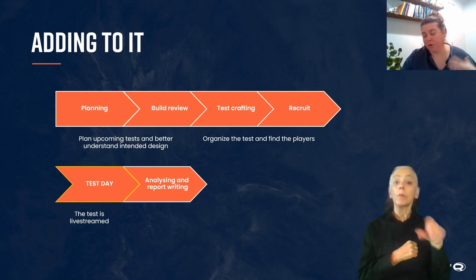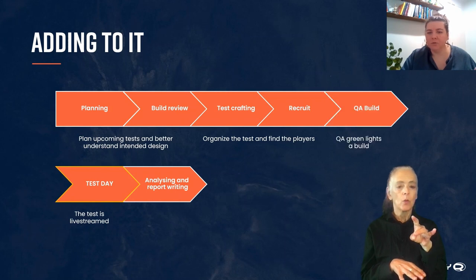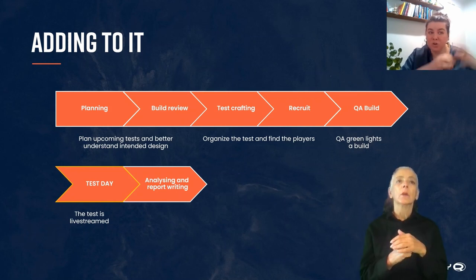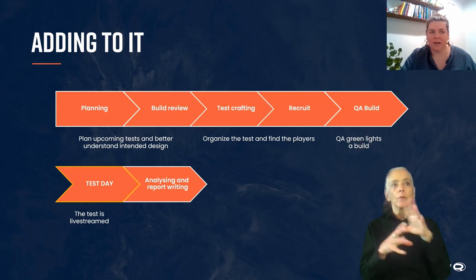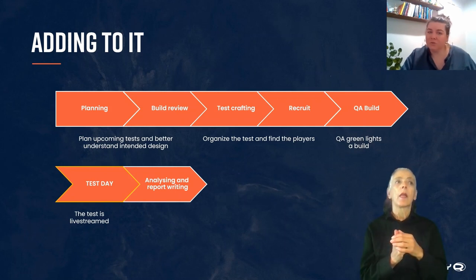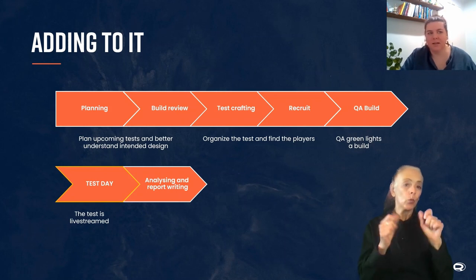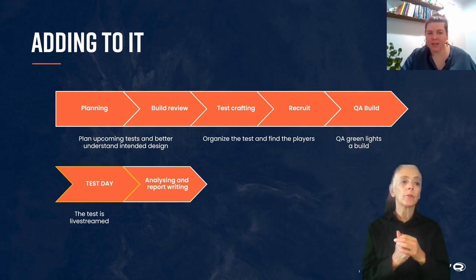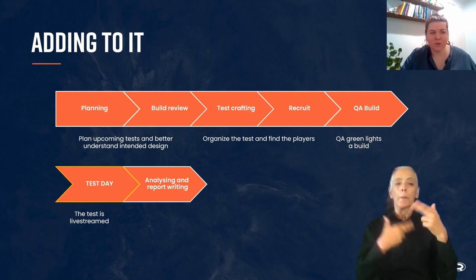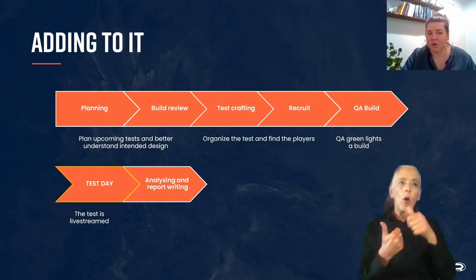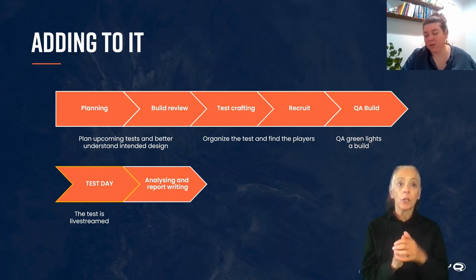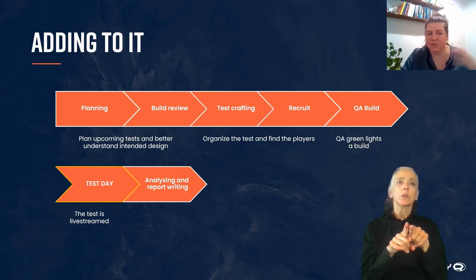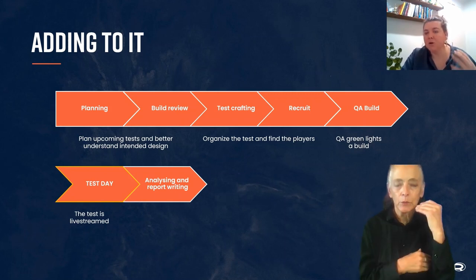One of the other problems I pointed out was the lack of process involving QA. We now have an iterated process in place. There is a process on QA's side that takes user research into account, and the builds needed for research are now QA tested with research goals in mind. There are also specific QA points of contact for each project. That point of contact provides a build with build notes that includes workarounds for all possible issues that could occur during a test. QA also watches the live streams on the day of the test to ensure everything runs smoothly and provide support if players experience something unexpected.